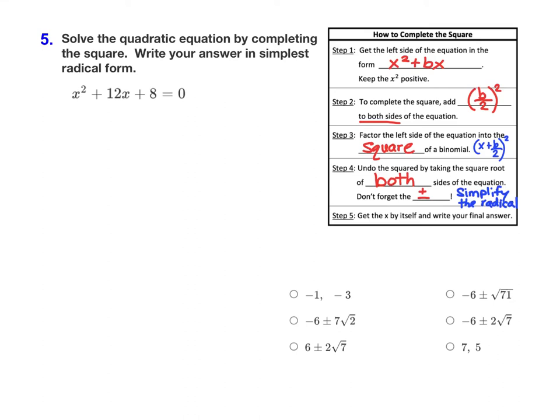For question number five, we want to solve the equation by completing the square and then write the answer in simplest radical form. The steps to completing the square are in your notes for lesson 9.5.